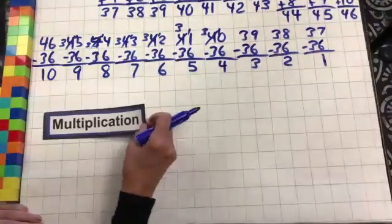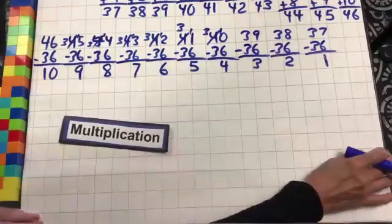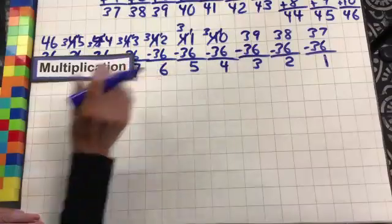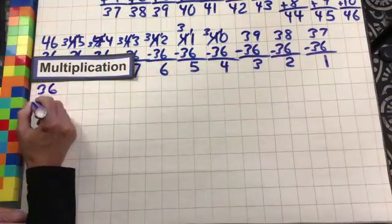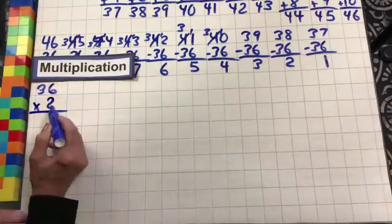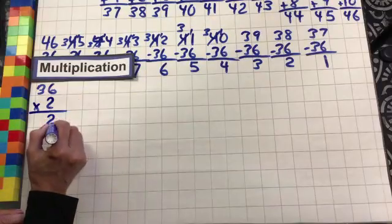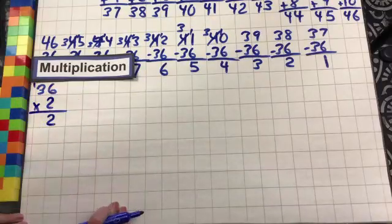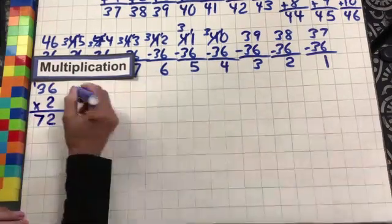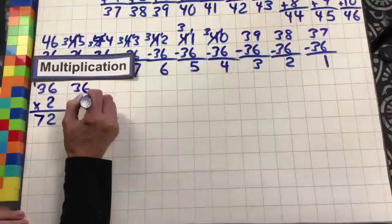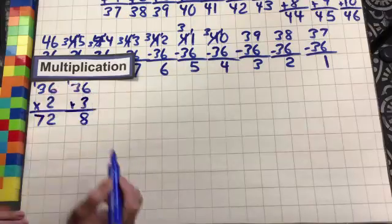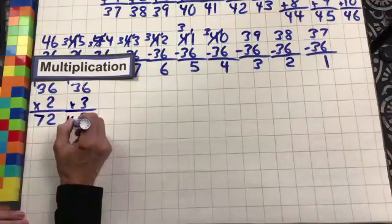You should have done all this work — you're just checking your work and fixing whatever you have wrong. Let's move on to multiplication. We're going to have 36 times 2, because we know 36 times 1 is 36. 2 times 6 is 12 — drop the 2, carry the 1. 2 times 3 is 6 plus 1 is 7. So 2 times 36 is 72. Let's do 3 times 36: 3 times 6 is 18 — drop the 8, carry the 1. 3 times 3 is 9 plus 1 is 10.